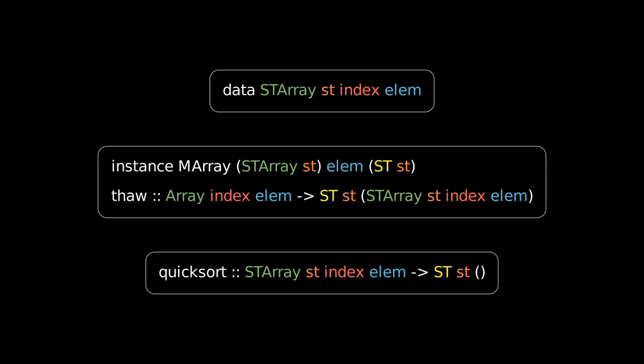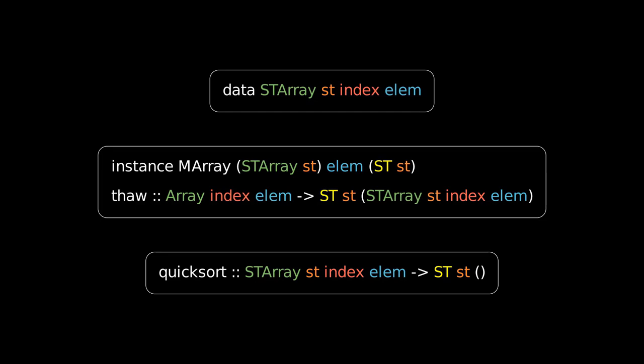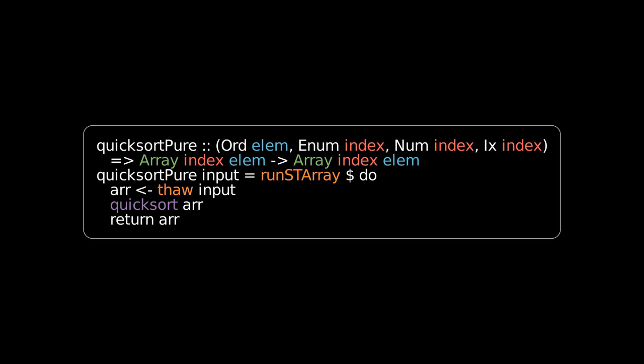If we pass in an ST array to the exact same quicksort function now, it will work just fine. This is a valid specialization of the more general type signature we gave to this function. We can use this to write a pure version of our quicksort. This will simply take a normal array as input and produce a normal array as output. We use run ST array to activate the ST monad action. It will use this function thaw to give us a mutable version of the input array. And then it will run our existing quicksort algorithm. The algorithm itself will be run in place. But note that the thaw process will make a copy of the array. Thus, this pure approach will still use O of n memory.